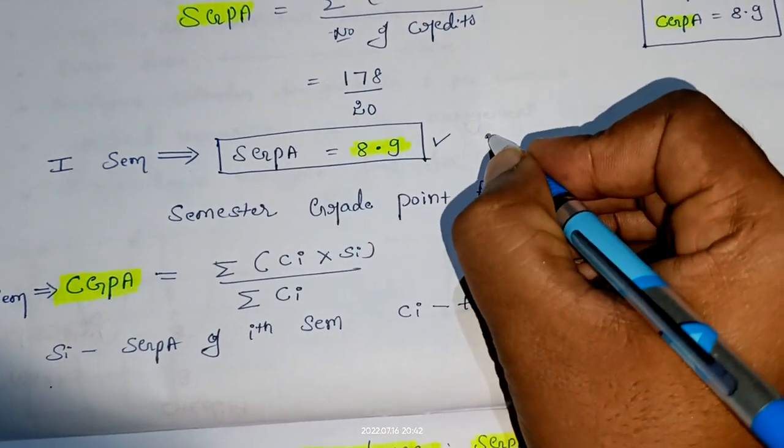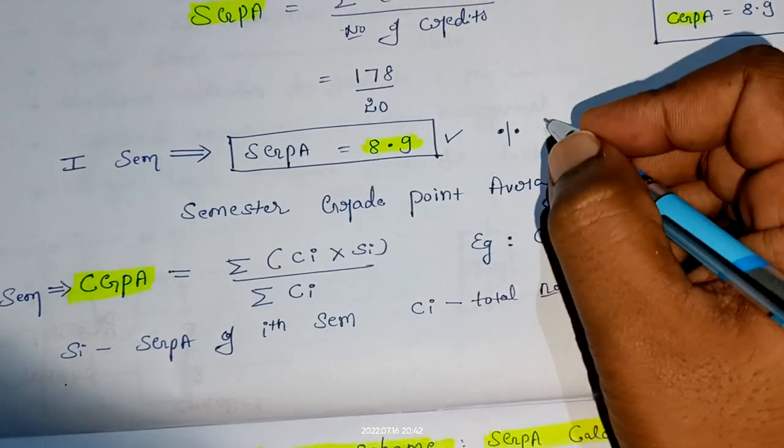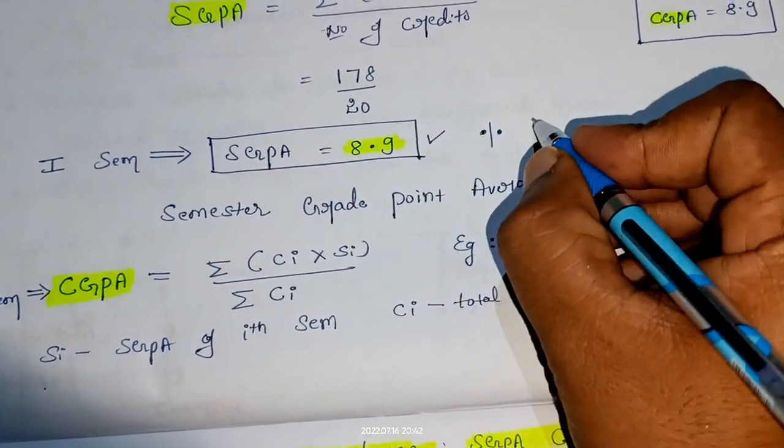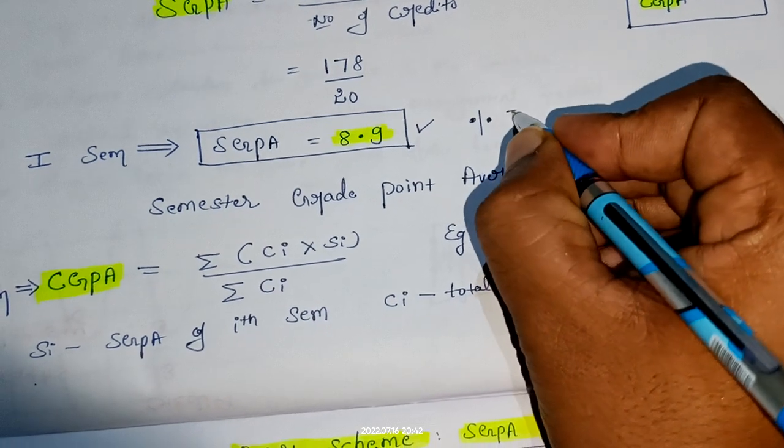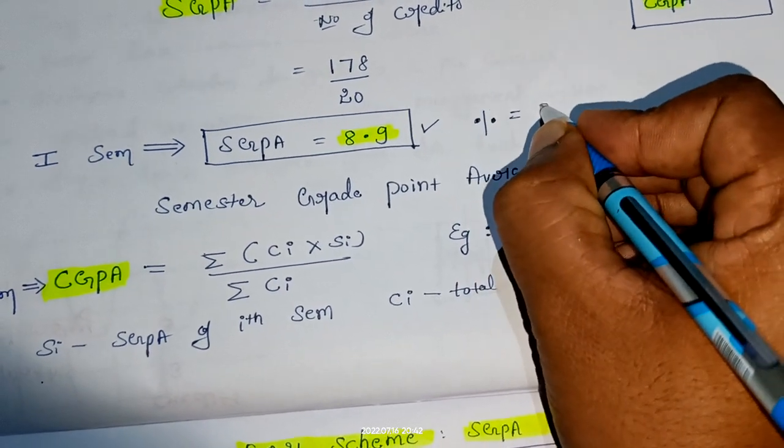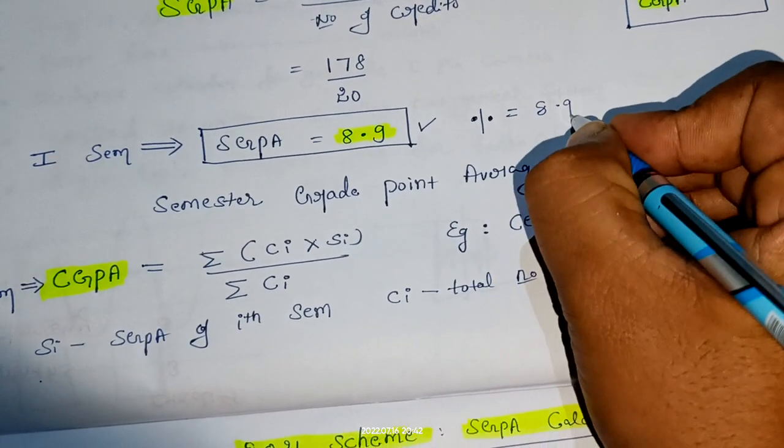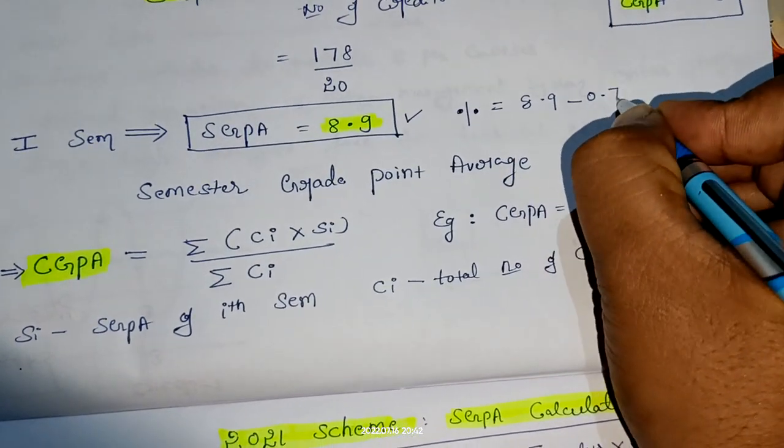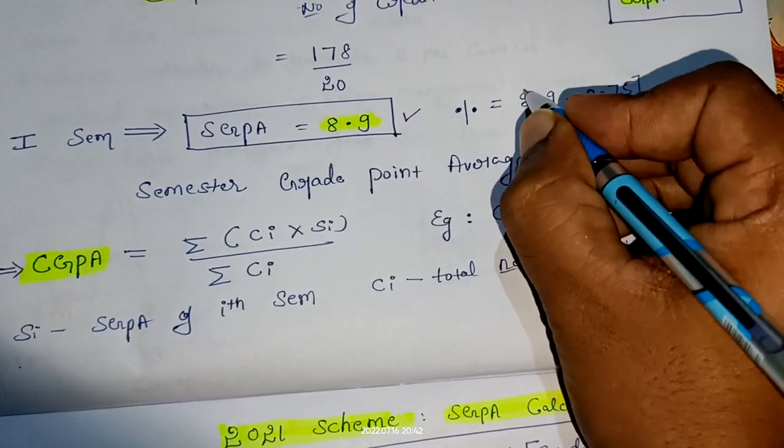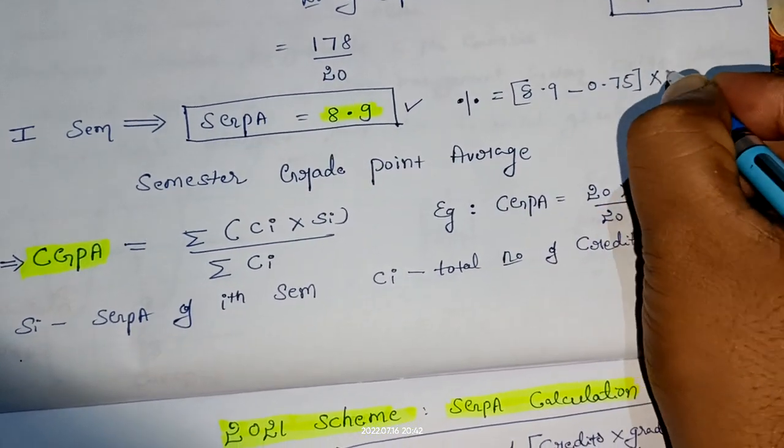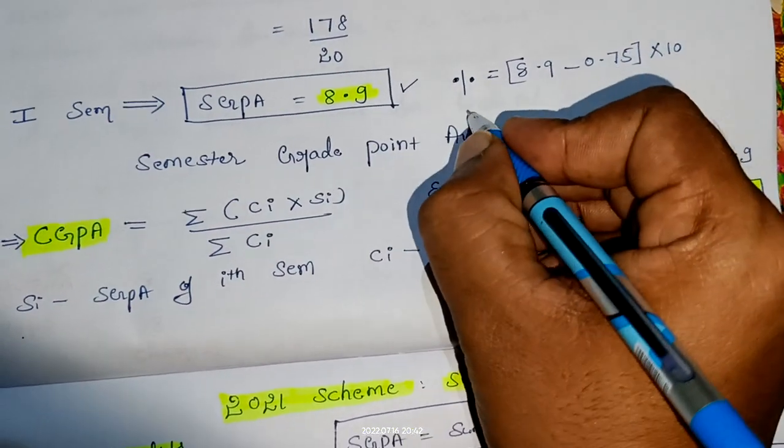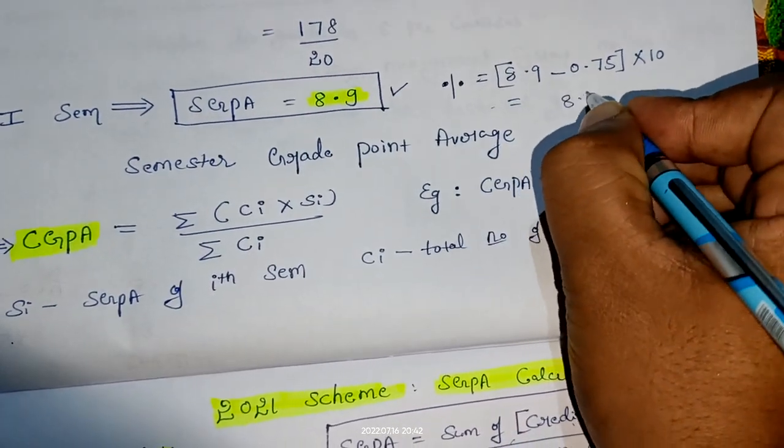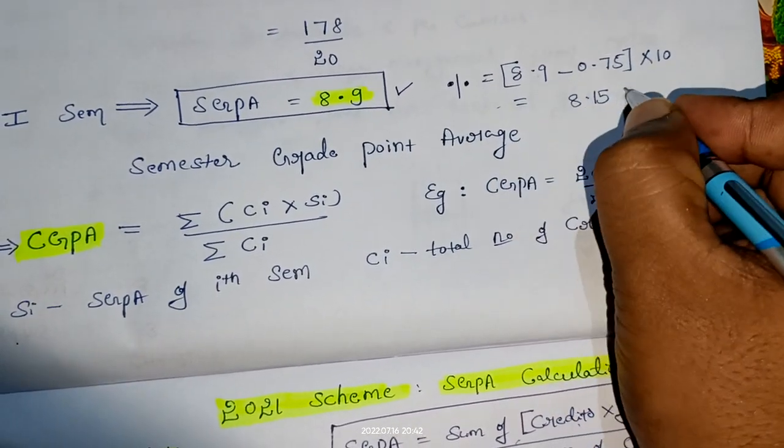Now SGPA is 8.9. I will switch on to the percentage calculation of the first semester. If SGPA is 8.9, how to calculate percentage? Percentage equals 8.9 minus 0.75, and this should be multiplied by 10. If you do this, you are going to get 8.15.